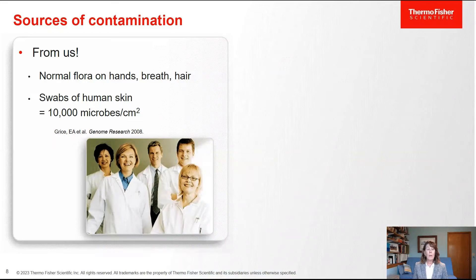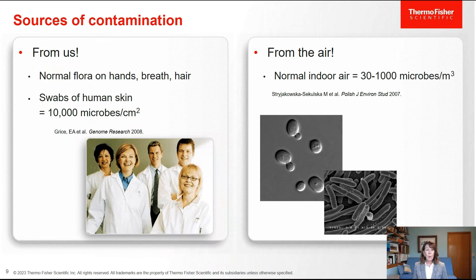So where do these contaminants come from? For microbial contamination, the most common source of microorganisms is from us. We all carry on average 10,000 microorganisms per square centimeter on our skin, and these microorganisms are also around us in the air. Normal indoor room air contains between 30 and 1,000 microorganisms per cubic meter. These microorganisms are ubiquitous in the laboratory environment, and it's critical to use proper aseptic technique to prevent them from getting into your culture.